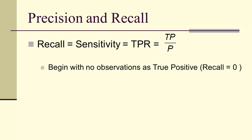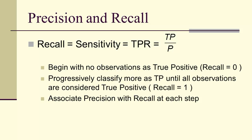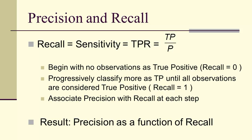To do so, we begin with no observations, so we begin with a recall of 0, no observations as true positive. Then we progressively classify more until we get to a recall of 1, and at each step we calculate the precision for that level of recall. The result is we'll get precision as a function of recall.